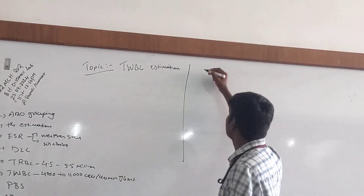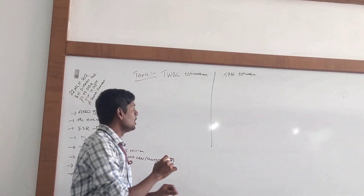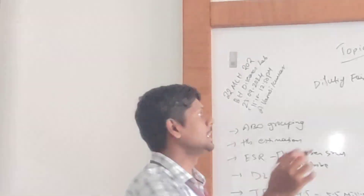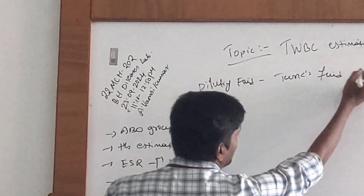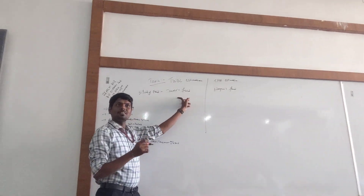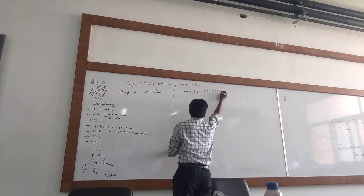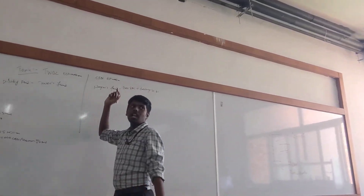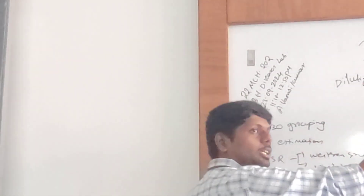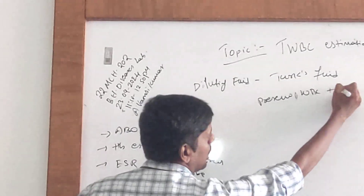I will draw the comparisons between WBC and RBC estimation. Tell me, what is the diluting fluid we are using in WBC? Turk's fluid. Whereas in RBC? KMN fluid. KMN fluid will preserve the RBC and destroy the WBC — lysing of WBC. That is the role of KMN fluid. And the role of Turk's fluid is opposite — it will preserve WBC and lyse the RBC.